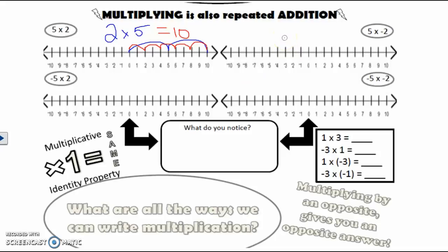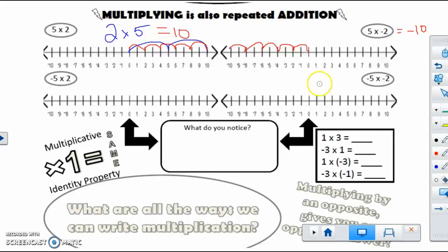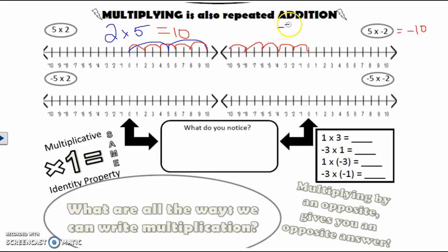Over here it says five times negative two, which means I have five groups of negative two. Starting here, I count five groups of negative two — remember, negative means I move to the left. After five sets, I land on negative ten. Because of the commutative property, I can also look at this as negative two times five, meaning negative two taken five times, and that still brings us to negative ten.